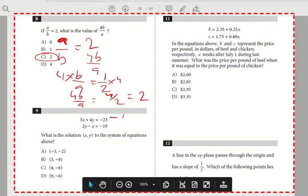Let's call this equation 1 and this equation 2. Let's rewrite equation 2. So, 3X plus 4Y equals minus 23. And if I place X below this 3X, there is minus X plus 2Y, this equals minus 19.